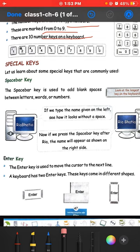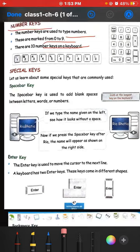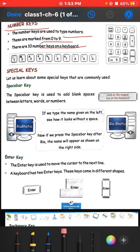As I taught you in the last video, a keyboard has 26 alphabet keys and 10 number keys, and we can use these keys to type numbers or to type letters, words, or sentences on the computer. Now today we are going to learn about some special keys, what these keys are, how they are used on the computer, and what are the uses of these keys.